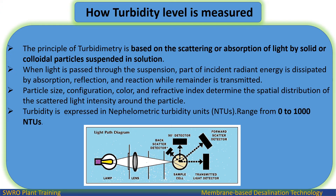How is turbidity level measured? The principle of turbidimetry is based on the scattering or absorption of light by solid or colloidal particles suspended in solution. When light is passed through the suspension, part of the incident radiant energy is dissipated by absorption, reflection, and reaction, while the remainder is transmitted. Particle size, configuration, color, and refractive index determine the spatial distribution of the scattered light intensity around the particle.